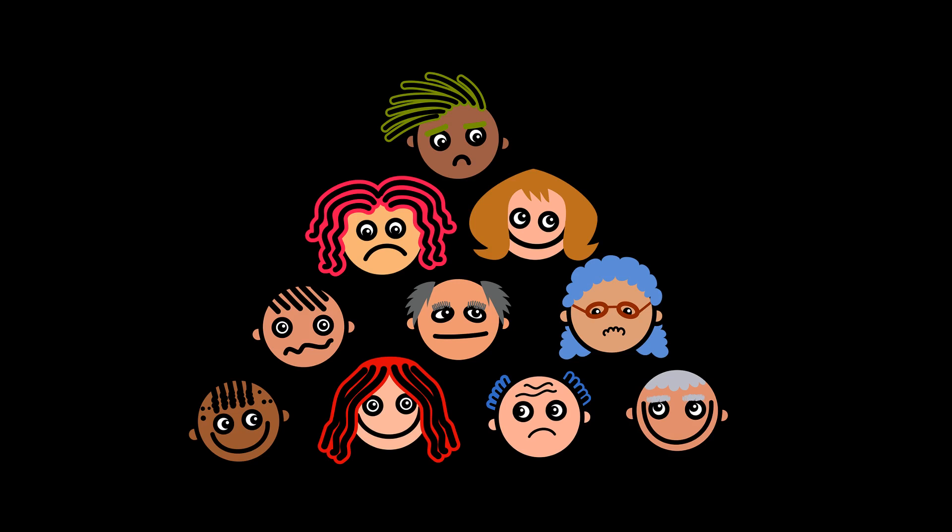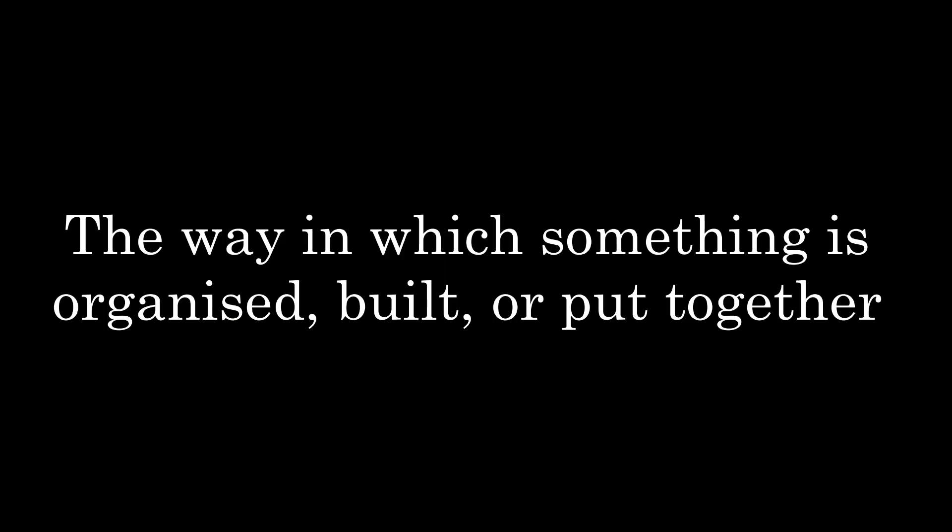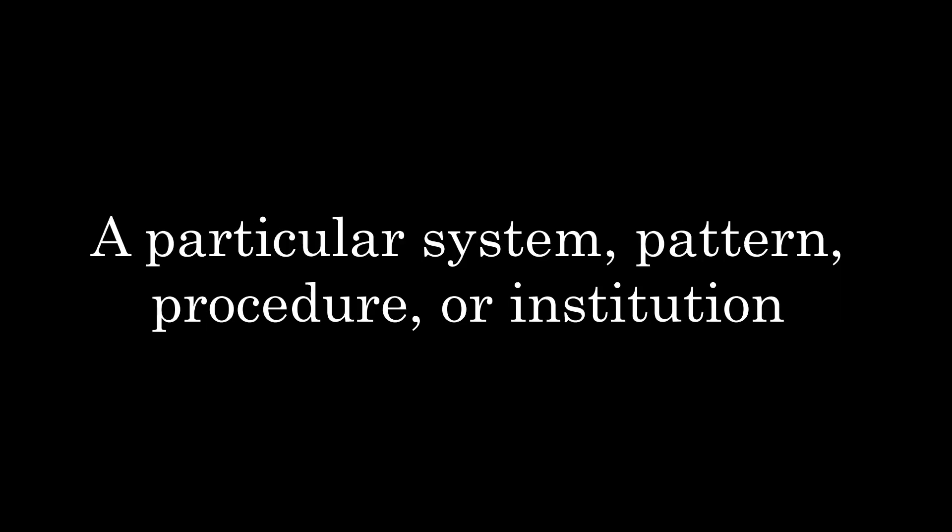The Oxford Advanced Learner's Dictionary (1999) gives three meanings of the term 'structure': one, the way in which something is organized, built, or put together — for example, the structure of the human body; two, a particular system, pattern, procedure, or institution — for example, class structure or salary structure; and three, a thing made up of several parts put together in a particular way — for example, a single-story structure.